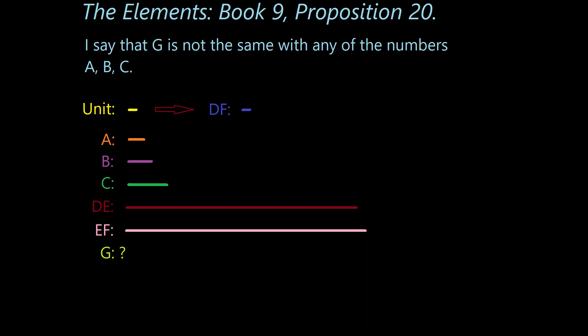In other words, the claim is that G cannot be A, it cannot be B, and it cannot be C. And thankfully, Euclid provides his reasoning. He begins by saying: for, if possible, let it be so. In other words, let's go ahead and assume that G is one of those values. If that is the case, Euclid continues...